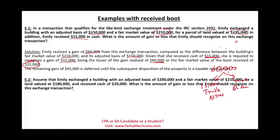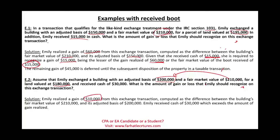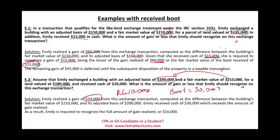Assume now that Emily exchanged a building with an adjusted basis of $200,000 and fair value of $210,000 for land valued at $180,000 and received cash of $30,000. The fair value is $210,000 and the basis is $200,000, so there is a $10,000 realized gain. The boot received in the exchange is $30,000. We choose the lesser of the realized gain and the boot — the realized gain of $10,000 is the lower of the two. Therefore, $10,000 is recognized.